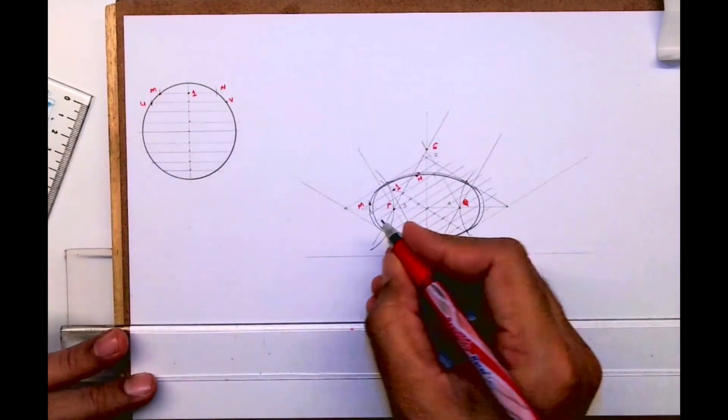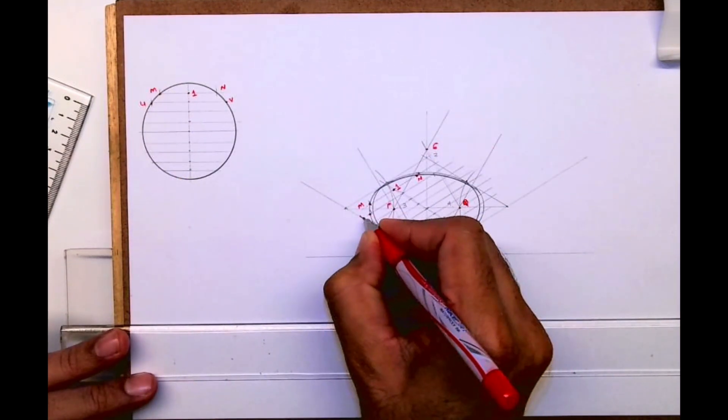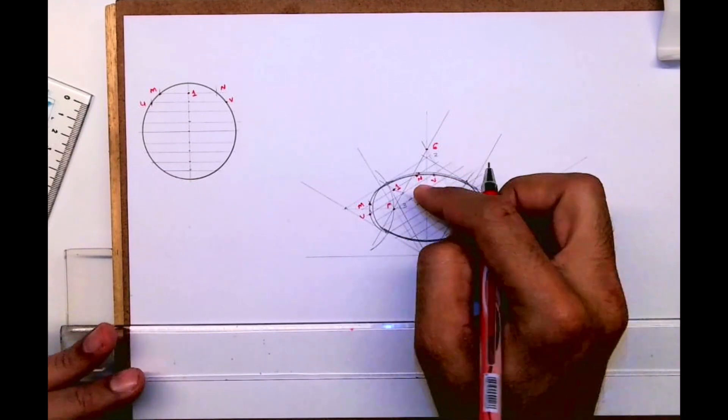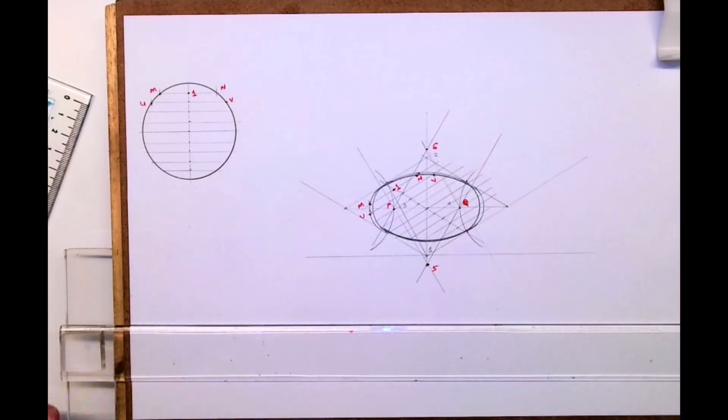So this is U, V. So this point is U and this point is V. So coordinate method and ortho four center method, they have exact same point, but four center method doesn't have.